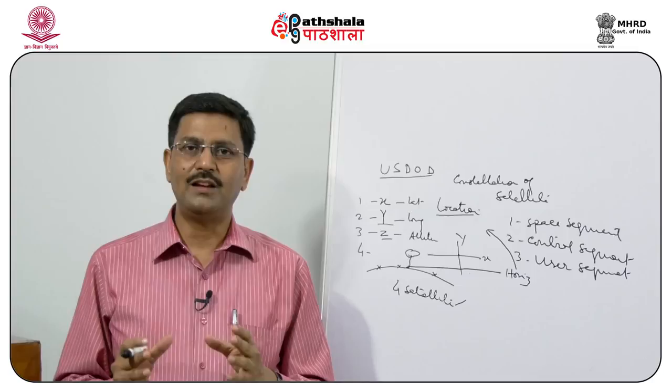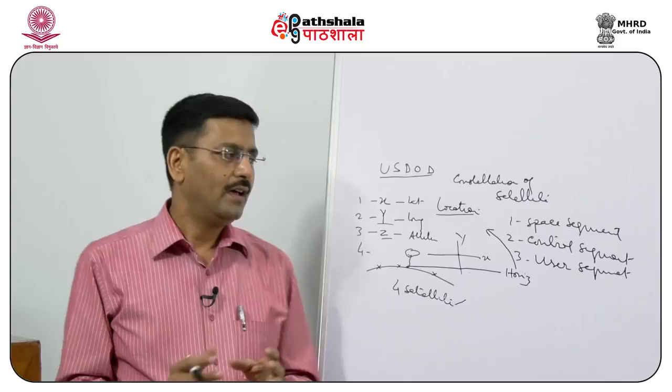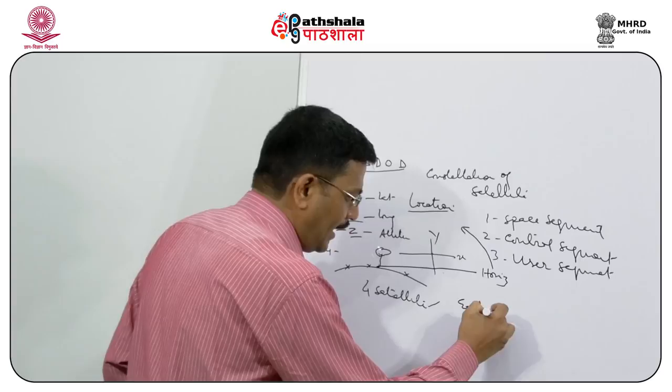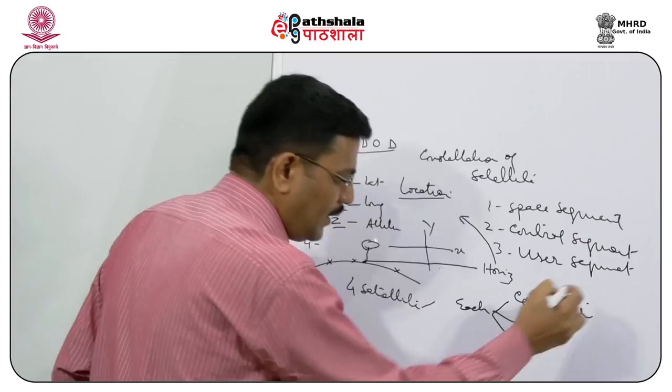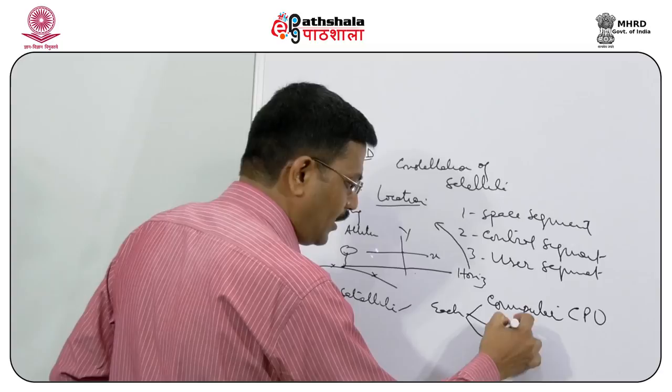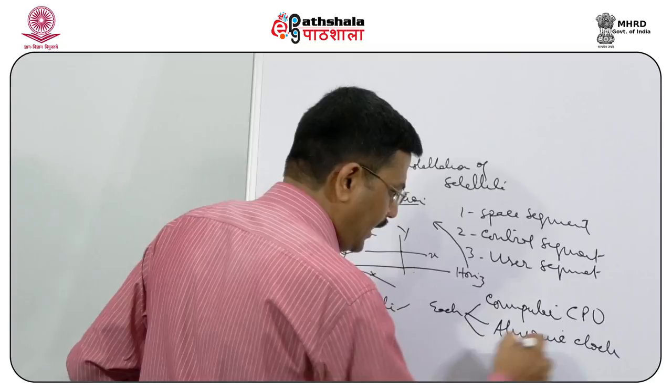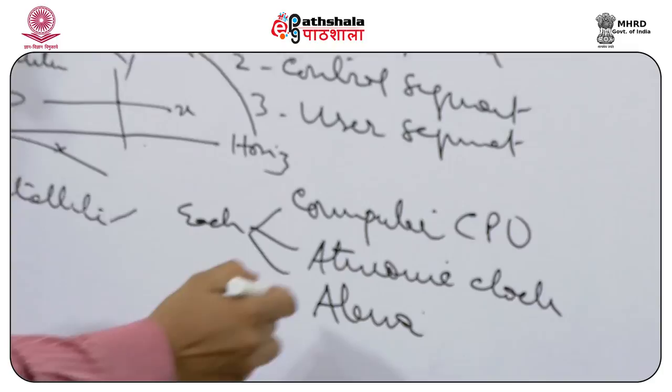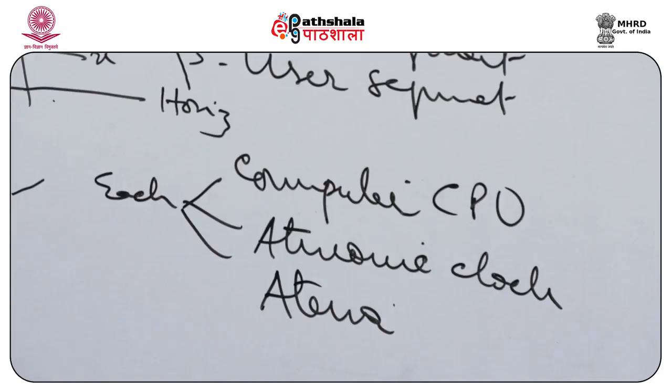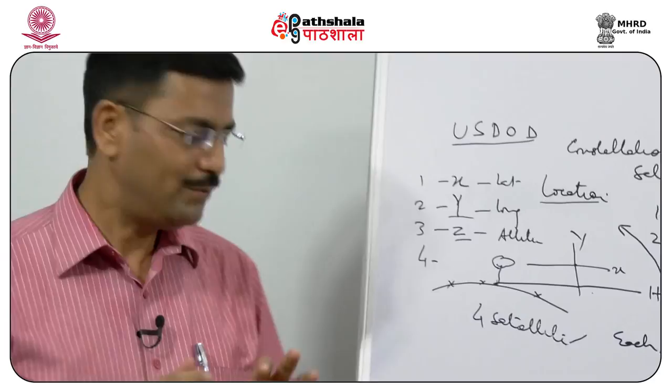Now let us talk about more specific details about each satellite. Each GPS satellite has three things: one is a computer with CPU, second is an atomic clock, and third is an antenna. This system is a two-way system — the satellites are in space and we are standing here with a GPS receiver.